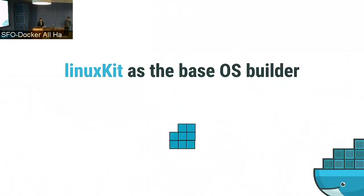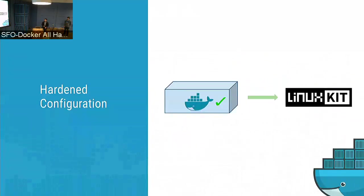Another way you can use LinuxKit is as a base OS builder to run Docker on. Interestingly, Docker will actually run inside a container — ContainerD — in LinuxKit. In doing so, you can limit the capabilities that Docker runs with, namespace Docker, and run it in a least-privileged fashion. LinuxKit and Docker work really nicely together. This combination originated from Docker for Mac, Windows, AWS, and Azure, where LinuxKit was born.